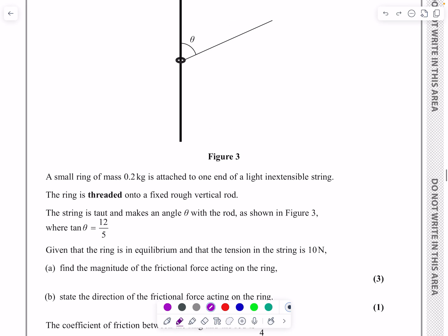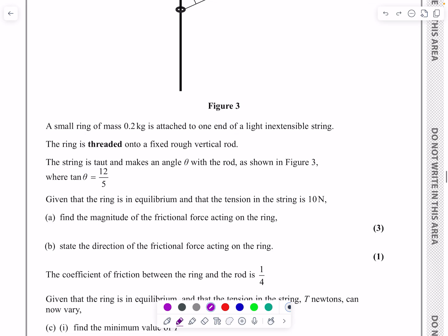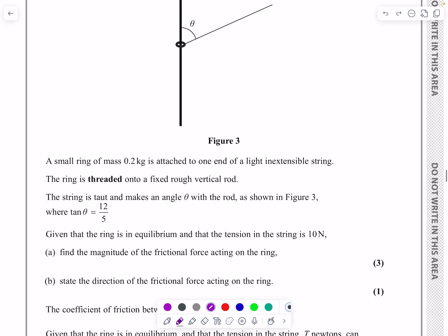It says we've got this small ring, mass 0.2, it's threaded onto this fixed rough rod, tan theta equals 12 over 5. I'm trying to work out my theta and it says given that the ring is in equilibrium and the tension in the string is 10. Okay, so I've got all that information, can we find the magnitude of the frictional force and can we state the direction of the frictional force? And although they've said this part's second, I really need to focus on that bit first before I can work out what I'm going to do with this information.